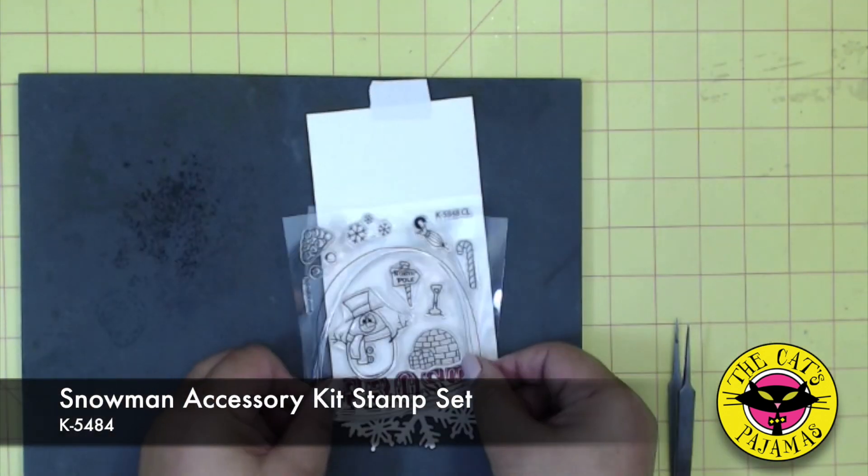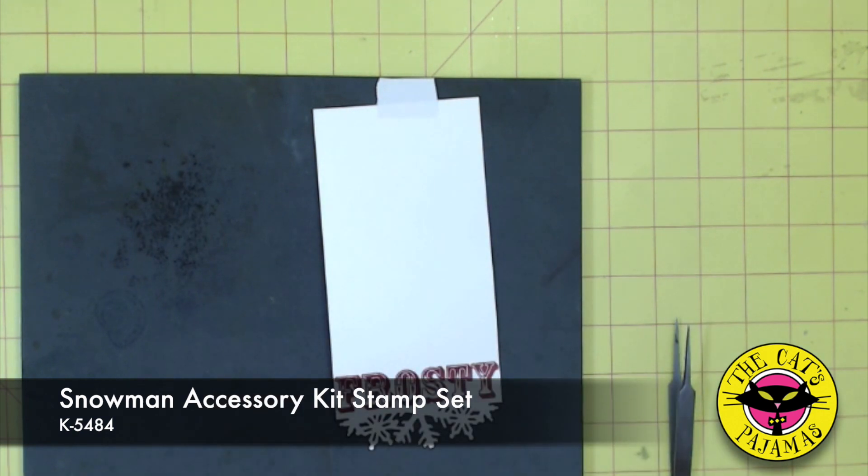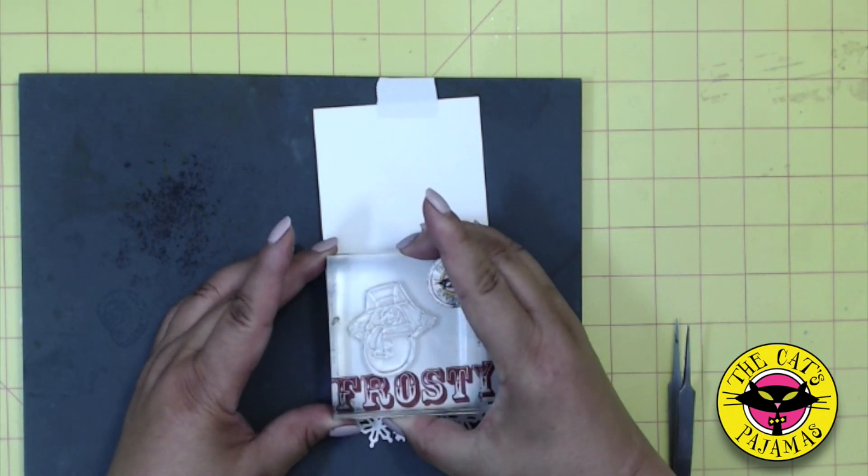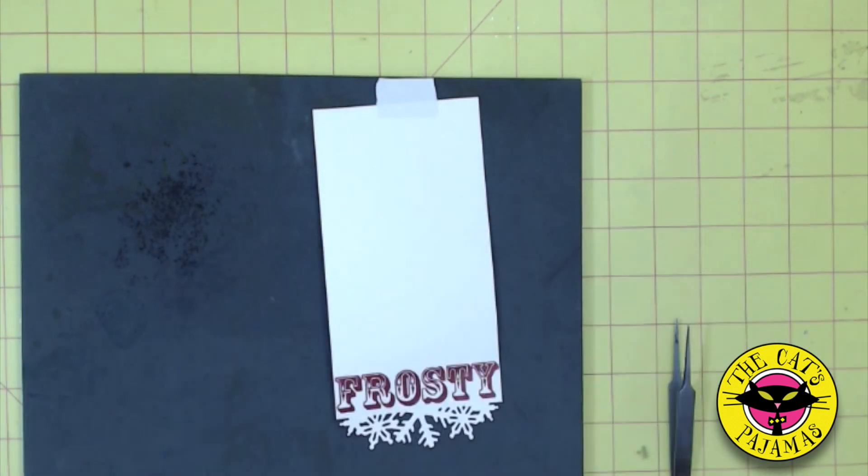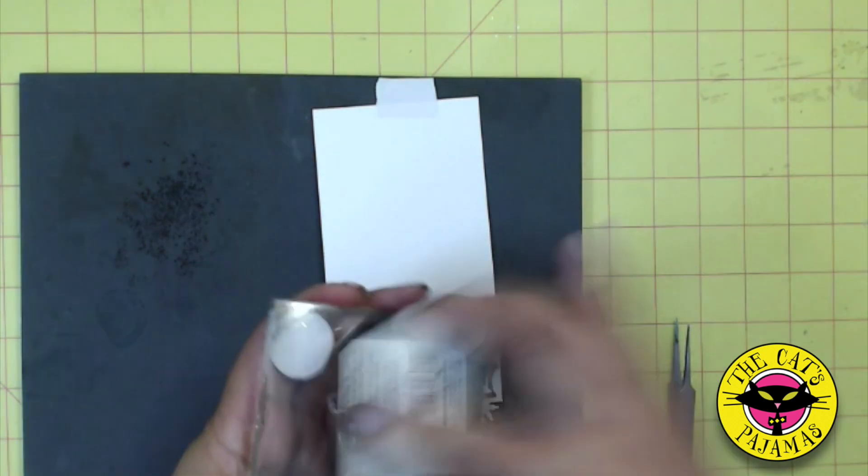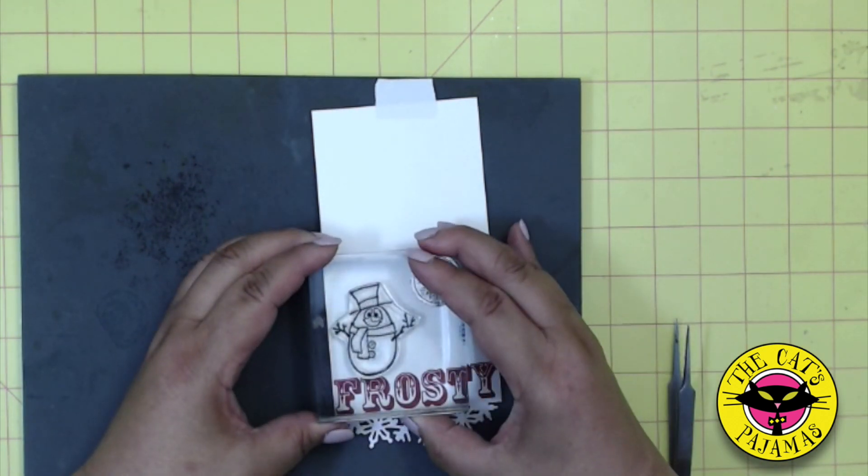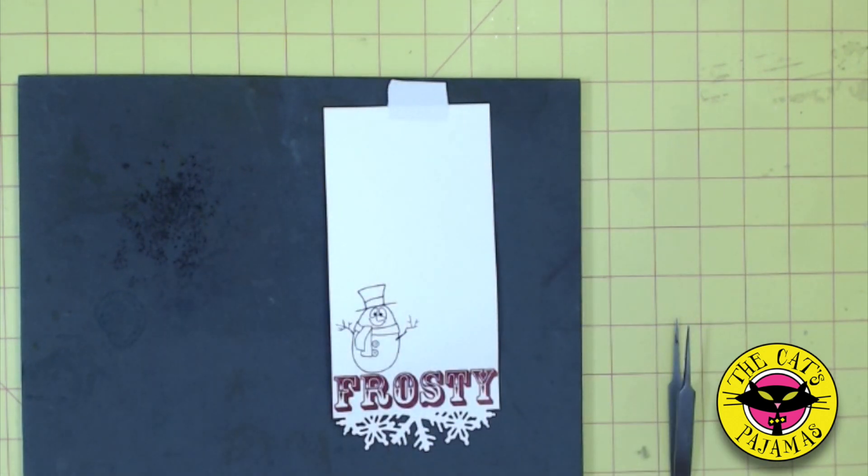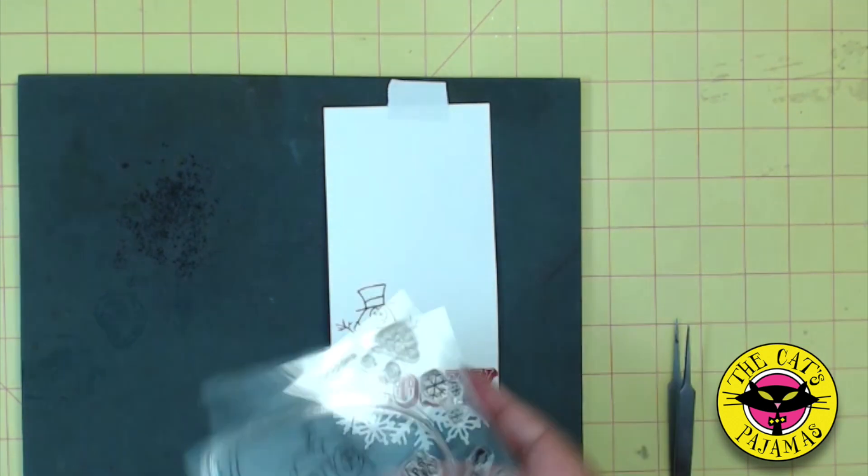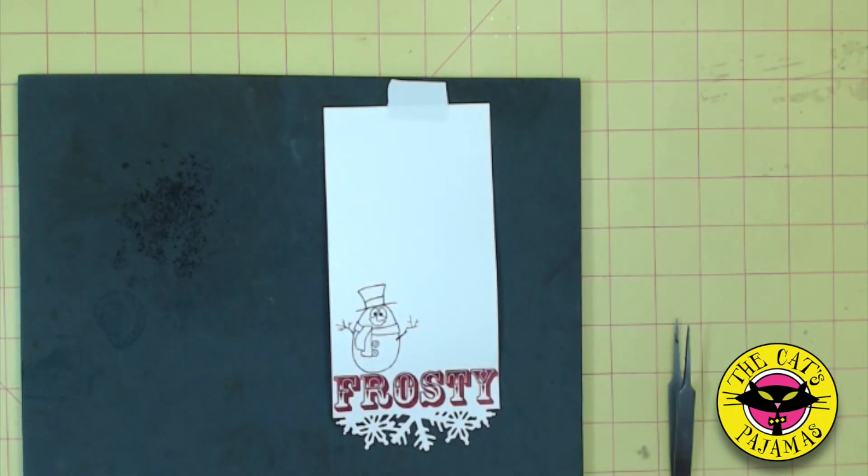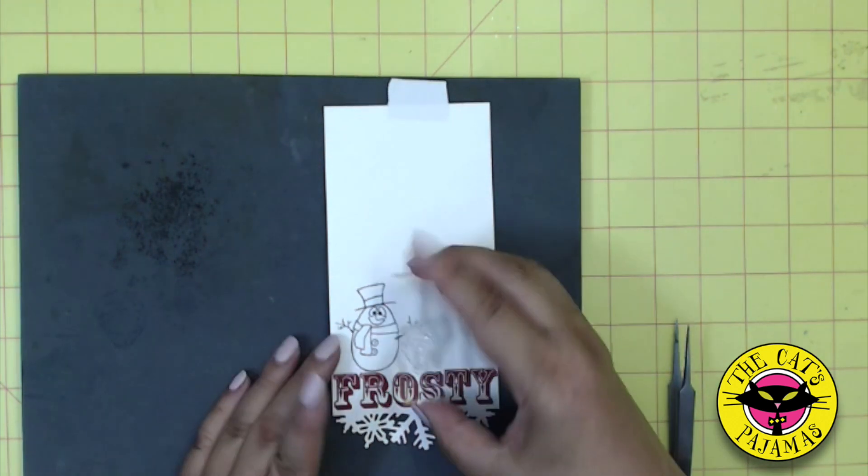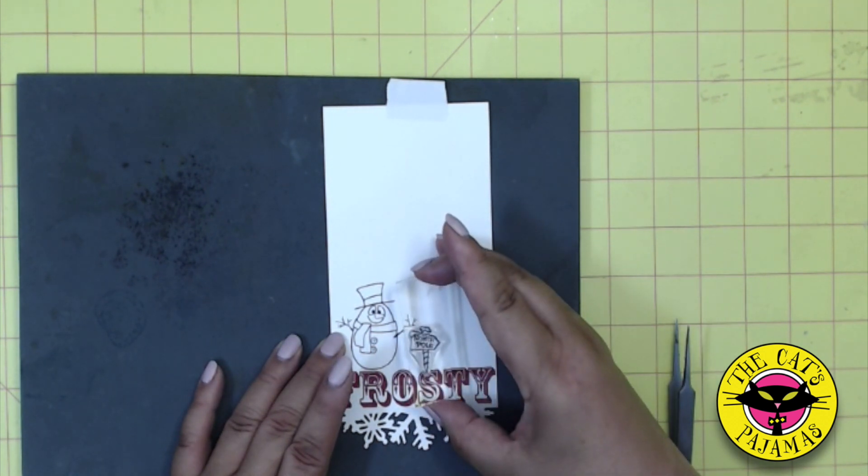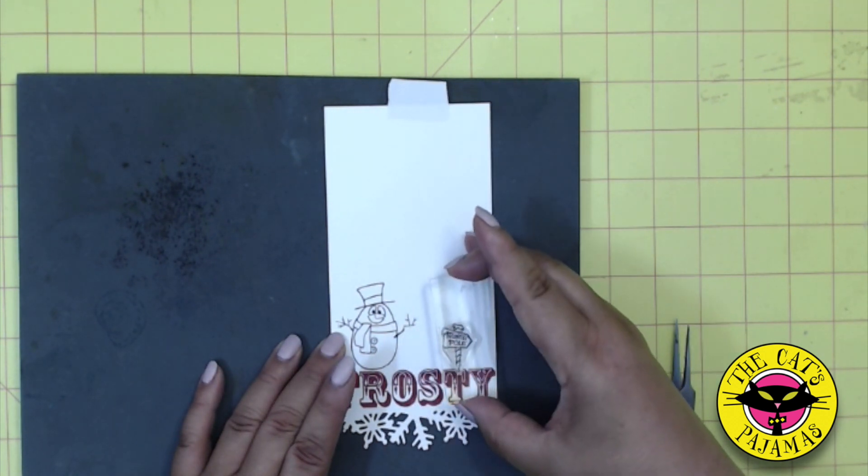Now for the snowman, I'm going to be using the snowman from the Snowman Accessories Stamp Kit. Don't ask me where I come up with these names. I'll be coloring with alcohol markers, so I'll use Marvy Black ink for the snowman. Looks good right there. And the North Pole sign. Put that in here. Maybe a little bit more balanced there.